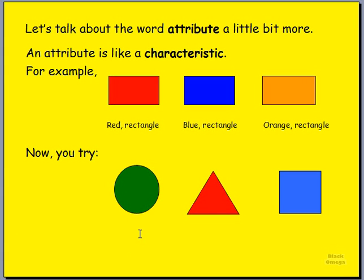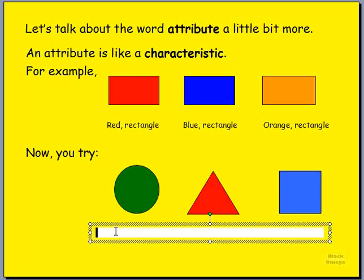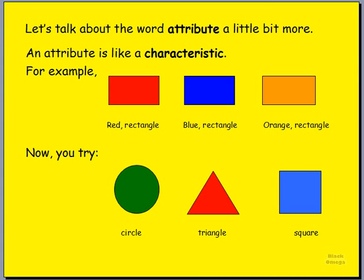Have a look at these shapes down here. What do we see here? You may have guessed this — the first one is a circle, so we've identified the shape. The next one is a triangle. And the last one is a square. Well done! These are all different shapes: one's a circle, one's a triangle, and the other one's a square. So we use these words to describe the object that we're looking at.